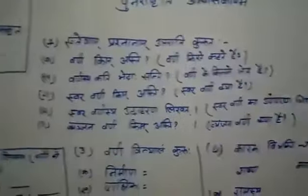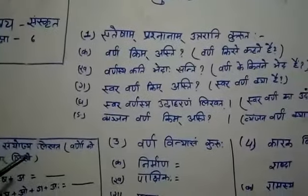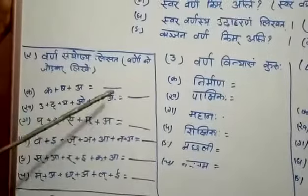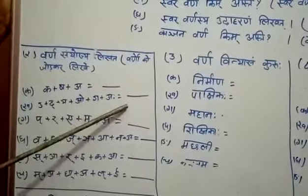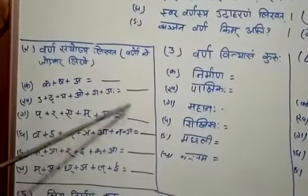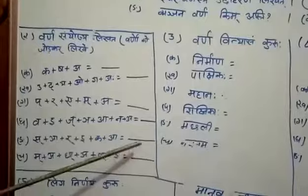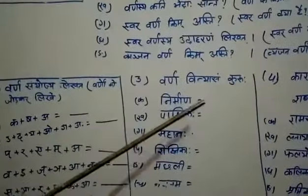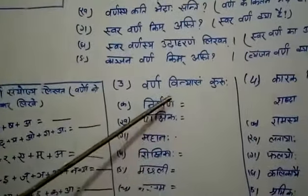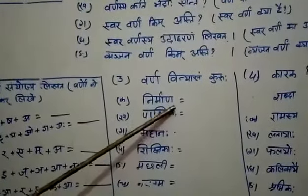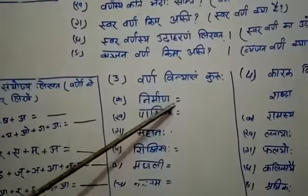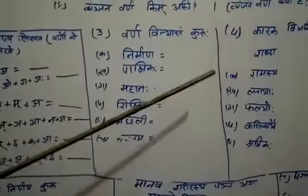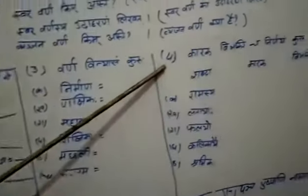Question number 2: वर्ण सन्योज लिखत — यानि वर्णों को जोड़ करके क्या word बनेगा, वो यहाँ लिखते जाना है। Question number 3 है: वर्ण विन्यासं कुरु — यानि इसको break करना है, अलग-अलग करके सभी वर्ण को लिखना है।